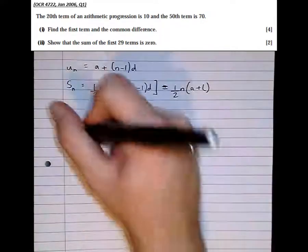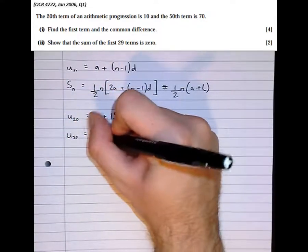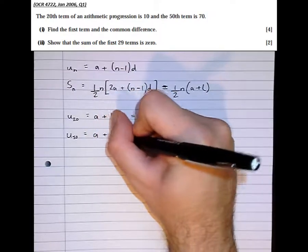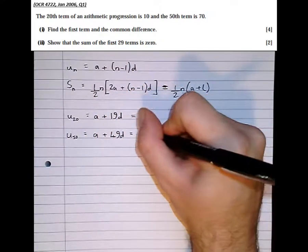Also the 50th term, u50, is a plus 49d, which is equal to 70.